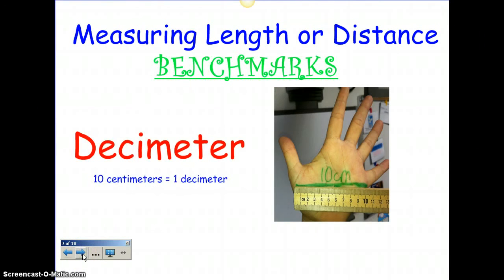Then we have a decimeter. If you open up your hand, the distance across your palm from one end to the other is about a decimeter. There are ten centimeters in one decimeter. When you think about the word decimeter, it has 'deci' in it, which means ten.